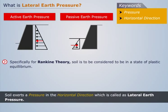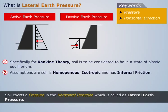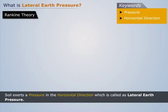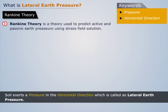Specifically for Rankine theory, soil is to be considered to be in a state of plastic equilibrium. Assumptions are: soil is homogenous, isotropic, and has internal friction. Rankine theory is applicable to only incompressible soils. Rankine theory is a theory that is used to predict active and passive earth pressure using a stress field solution.